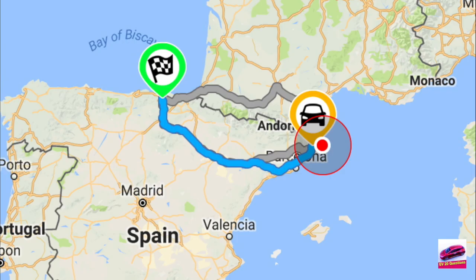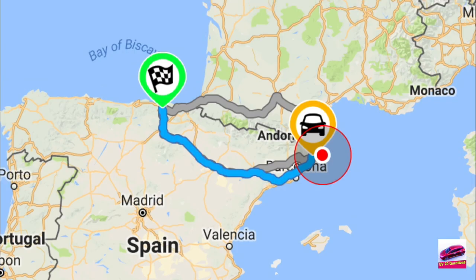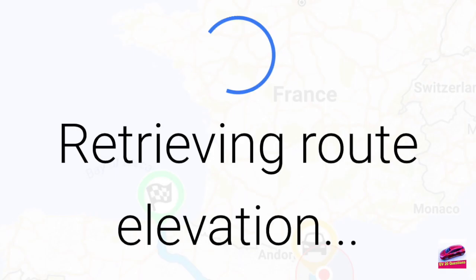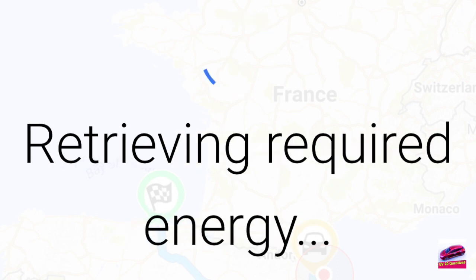On the next screen we get shown the choice of three different routes. Click on A, B or C to choose which one you want to use. Next Charge then does its thing to retrieve route elevation and to get the energy required for the journey.